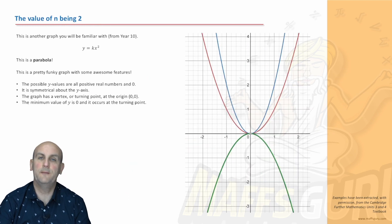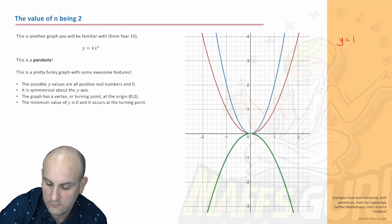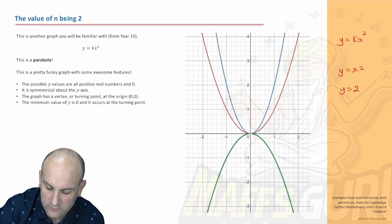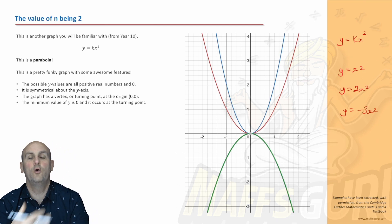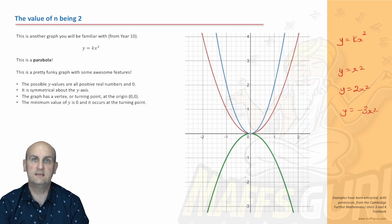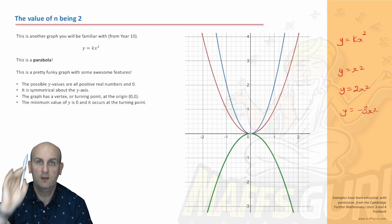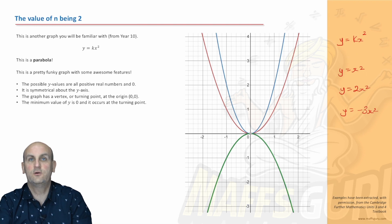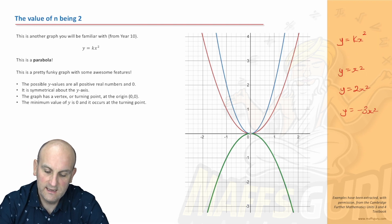What about the graph of n being two? We've got y equals kx squared. We've seen those type of graphs. Y equals x squared, y equals 2x squared, y equals minus 3x squared. These graphs are all parabolas. They all have a u shape. When the value in front of the x squared is positive, it's a u shape. When it's a negative value, it's an n shape. But it still has the same format. These are just awesome. Quadratics, parabolas, fabulous.